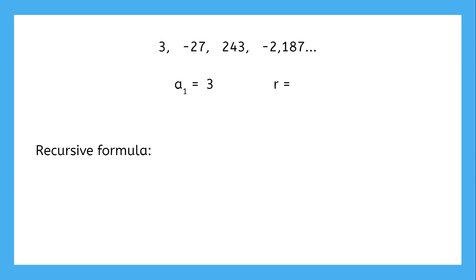To find the common ratio, we divide each term by the previous term. Negative 27 divided by 3 is negative 9, and we get the same thing for the other ratios. So that's what's making the signs alternate: when you multiply by a negative, the signs change.